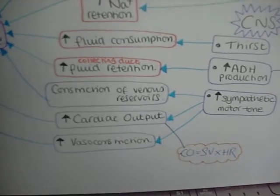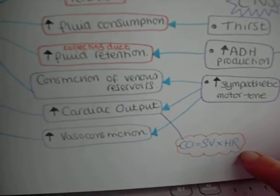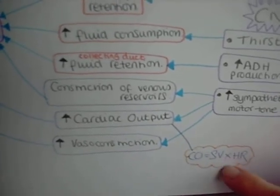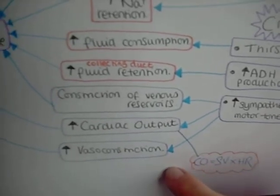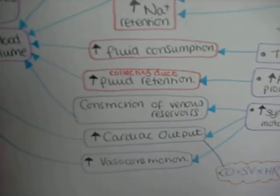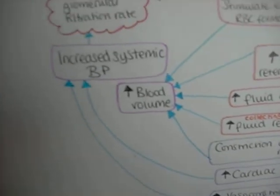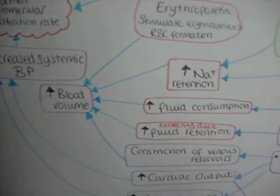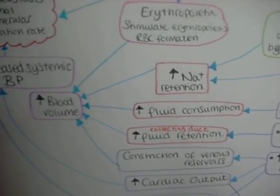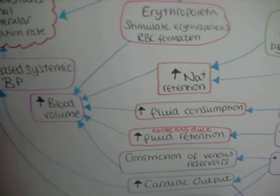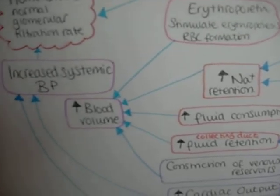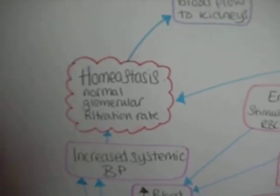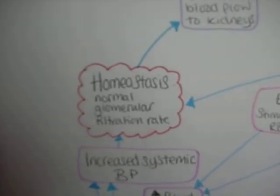Increased sympathetic motor tone increases cardiac output — cardiac output is stroke volume times heart rate — so it increases both stroke volume and heart rate. It also causes vasoconstriction. Cardiac output and vasoconstriction directly increase systemic blood pressure, while constriction of venous reservoirs, fluid retention, fluid consumption, and sodium retention increase blood volume. These all increase systemic blood pressure and return you back to normal glomerular filtration rate homeostasis.